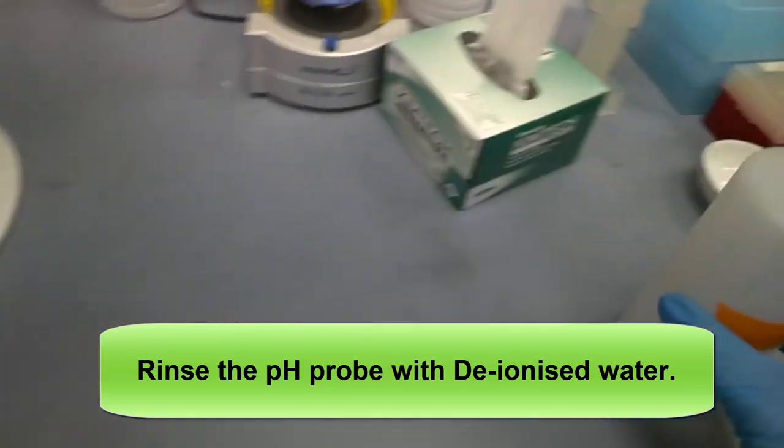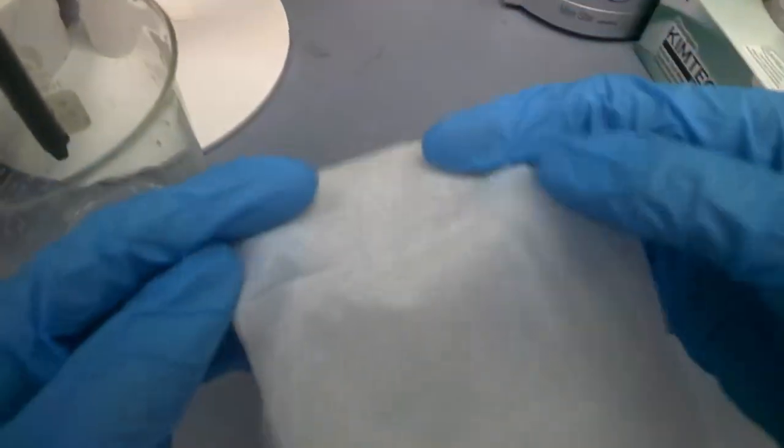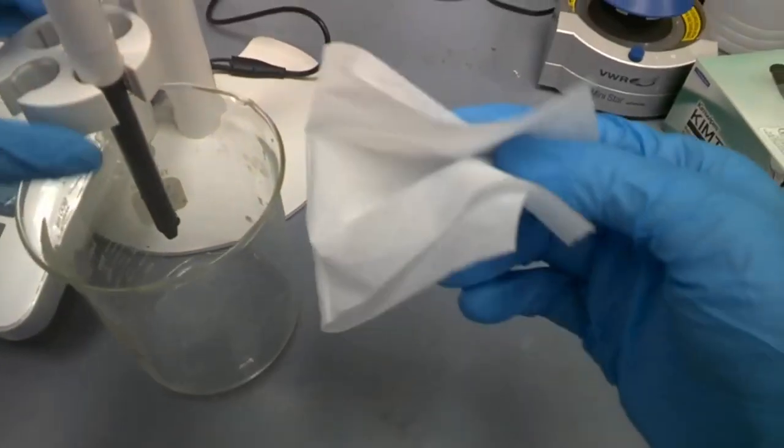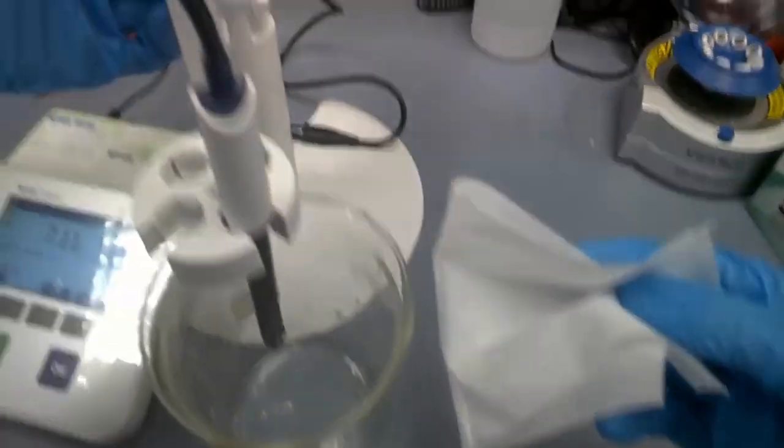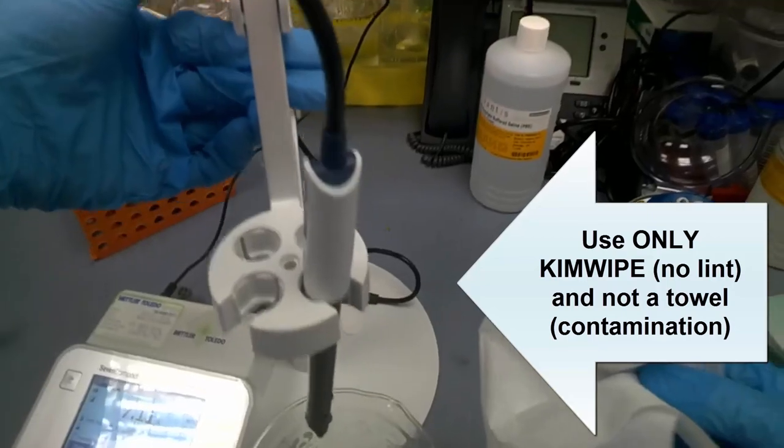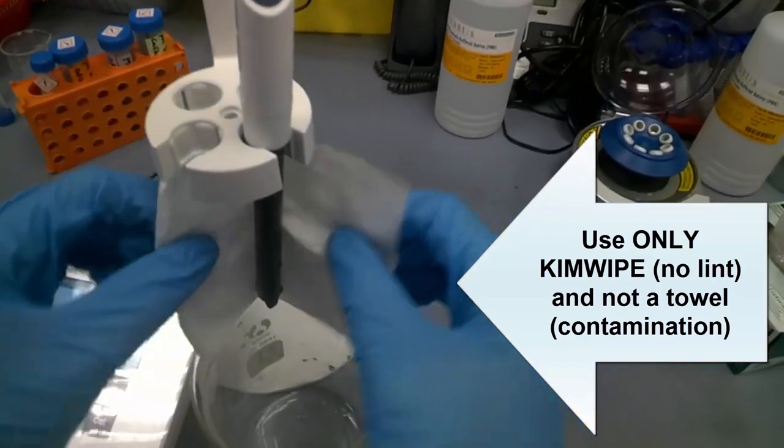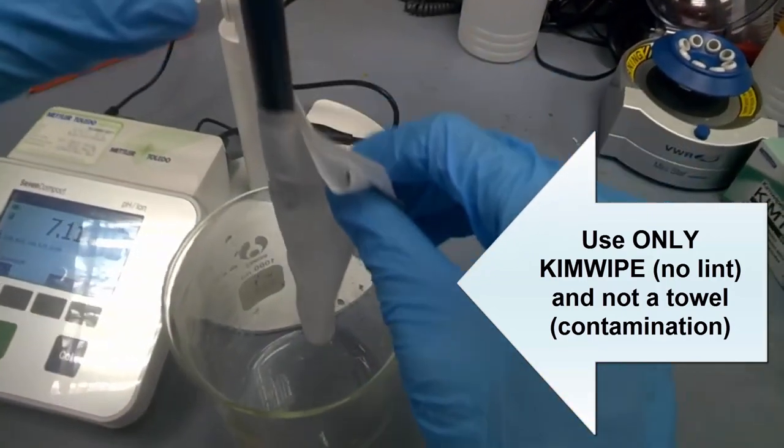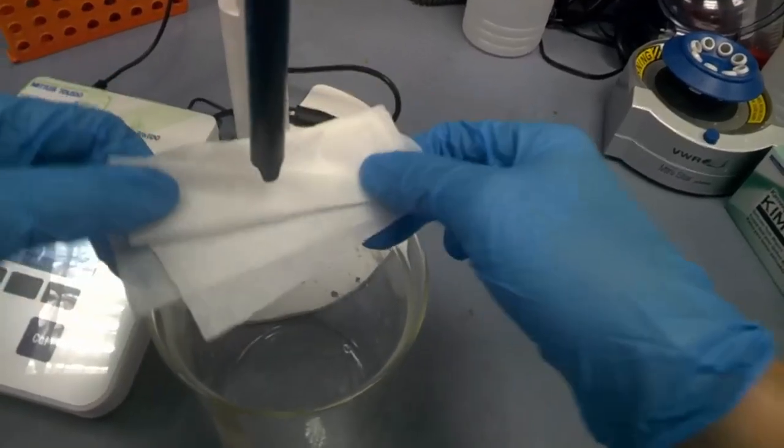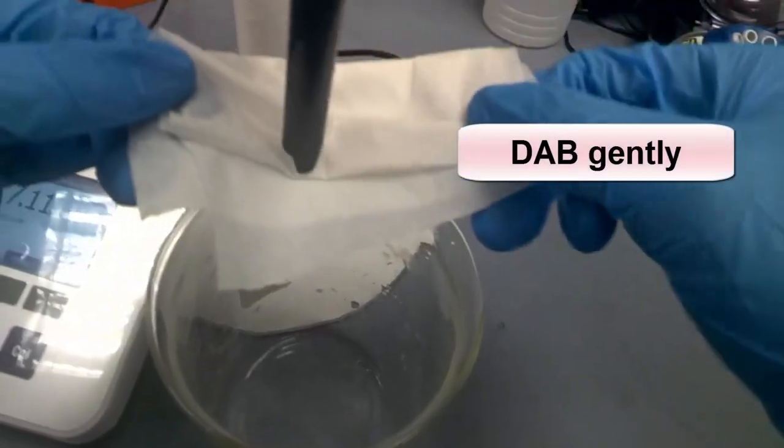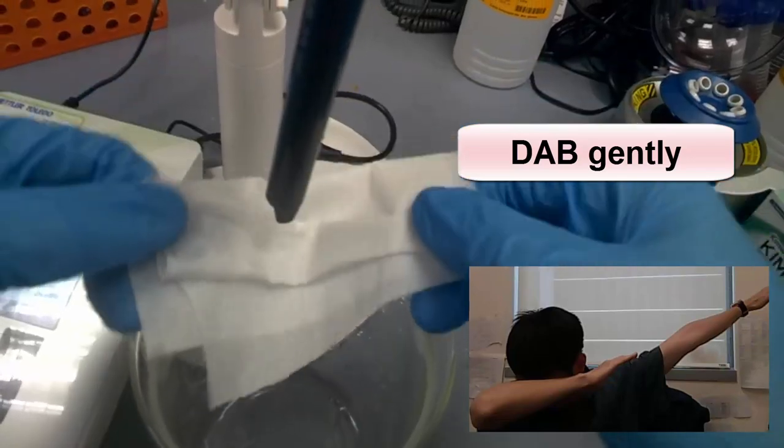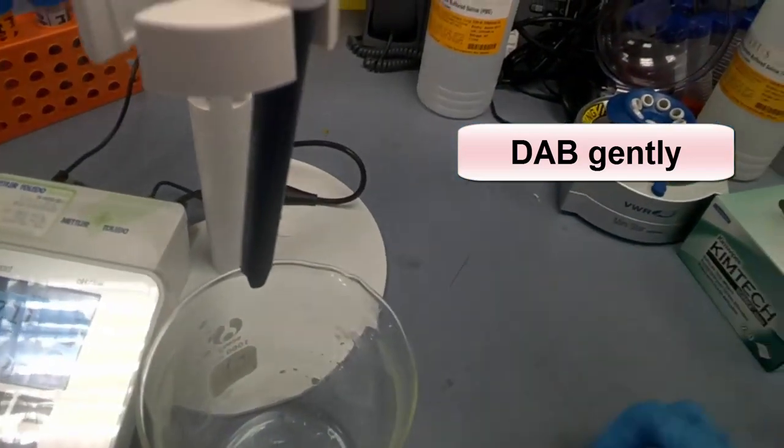Next, we use a piece of kim wipe, folding to halves. Then lift up the arm at this position. Hover around it, just dry it. The bottom part, just dab gently.